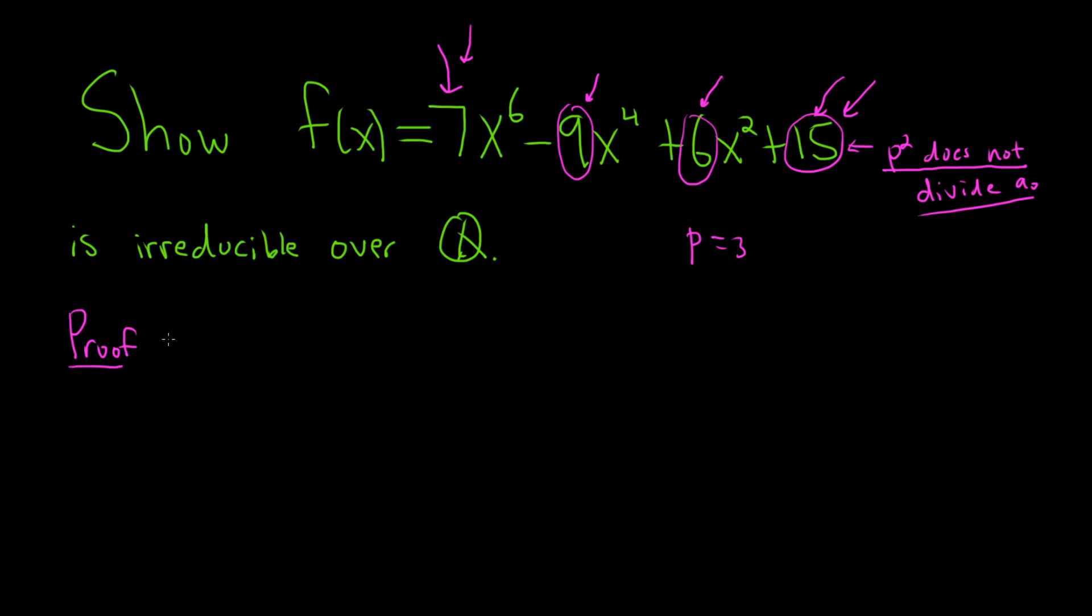So let's just write that down. So note, p equals 3 is prime, and p divides 15, p divides 6, p divides negative 9, but p does not divide 7, and p squared, which is 9, does not divide 15.